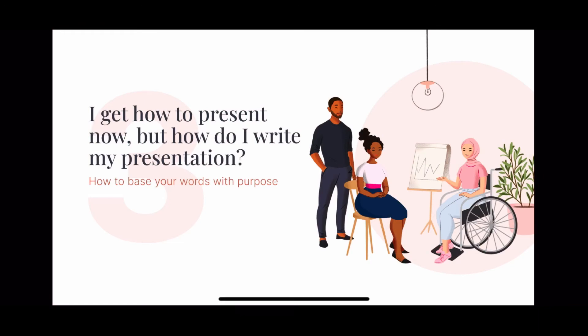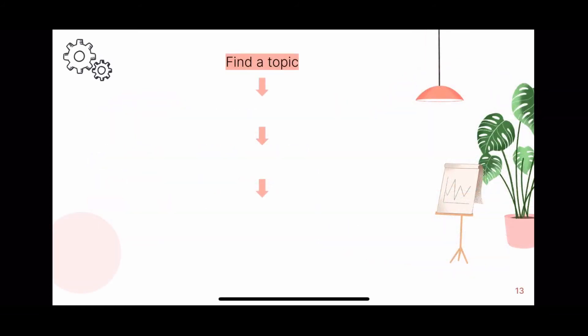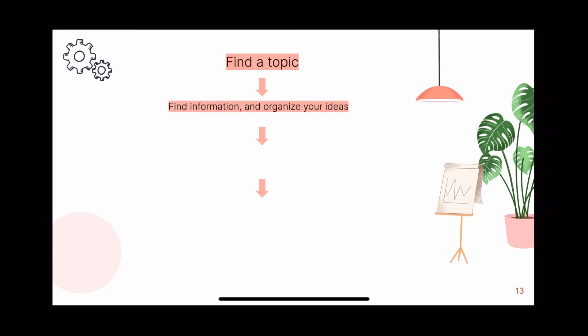Hopefully you now understand how to present, but you might be asking: how do I write my presentation in the first place? For people struggling with this, here's a quick set of steps. First, find a topic — this can either be assigned to you by a teacher or whoever is in charge, or a passion project. Next, find information and organize your ideas. By finding information, you can seem more credible to your audience and answer questions with ease. Additionally, you would likely seem more knowledgeable once you have more information on a topic.